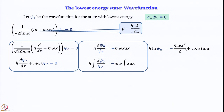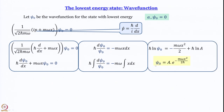Writing the constant as ℏ·ln(A), we get ℏ·ln(ψ_0/A) = −mωx²/2. Raising both sides to the power of e gives ψ_0 = A·e^(−mωx²/2ℏ). We have essentially found what this lowest energy wave function is — well, almost, because we still need to find A.